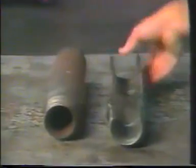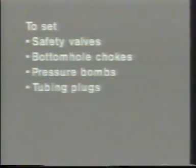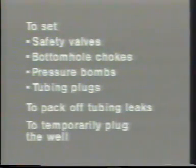Seating nipples are integral components of the tubing string which have a polished bore and an internal diameter slightly less than the tubing drift diameter. Usually, a locking profile is machined from the internal diameter of the nipple. There are three main types: pump seating nipples, selective landing nipples, and non-selective or no-go landing nipples. Pump seating nipples are utilized to land and seal off a bottom-hole pump run into the well on a string of sucker rods. Selective landing nipples and the devices set inside them are used to permit the setting of wireline plugs for pressure testing, setting hydraulic packers, providing a place to set safety valves, bottom-hole chokes, bottom-hole pressure bombs, and tubing plugs, to pack off tubing leaks, and to temporarily plug the well and allow the removal of tubing or surface equipment.